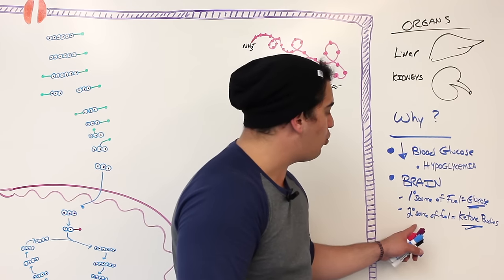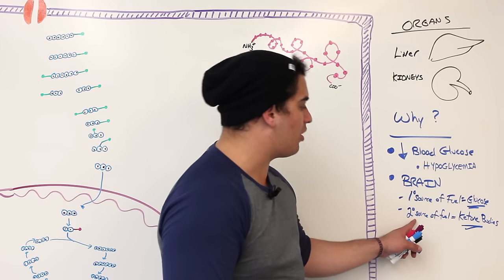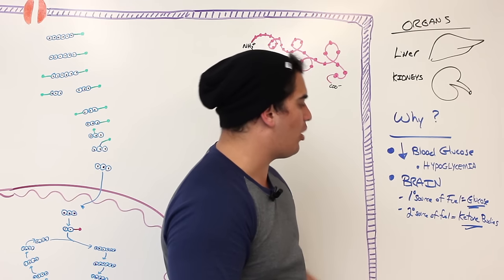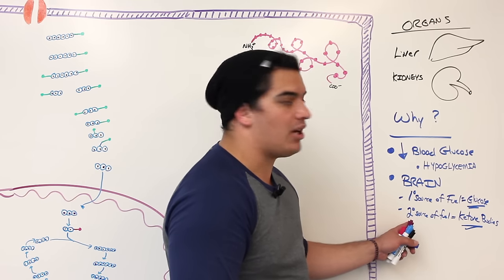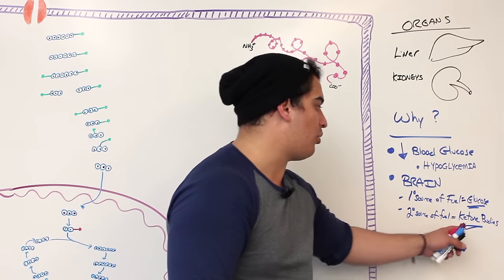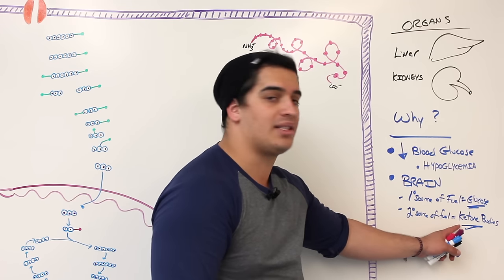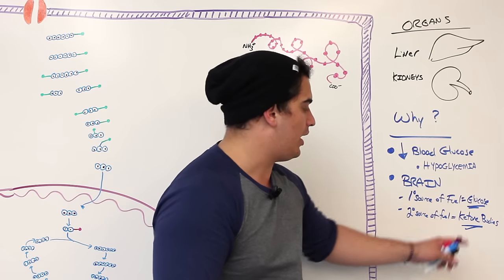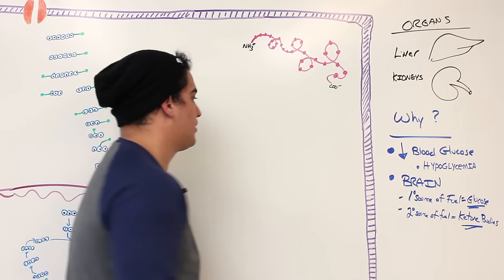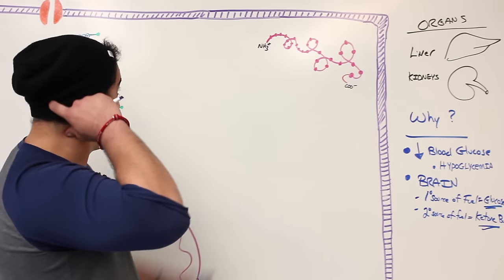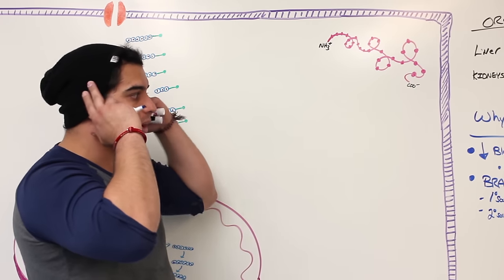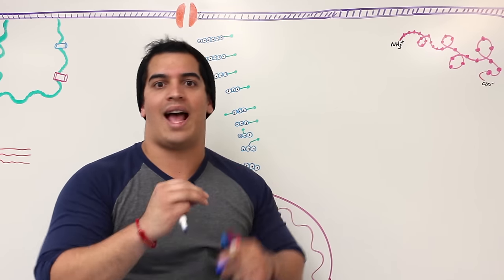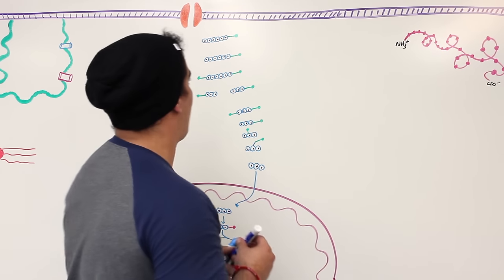A secondary source of fuel for the brain is ketone bodies, which it can utilize whenever we're fasting for a prolonged period. However, ketone bodies can cause the blood to become acidic, leading to ketoacidosis — so it's not preferred. That's why gluconeogenesis matters: low blood glucose, brain fuel needs, and avoiding ketoacidosis.